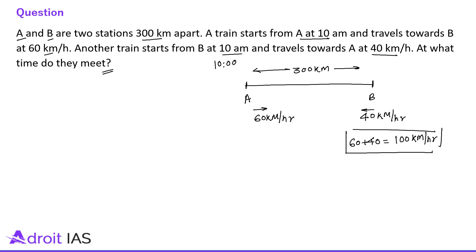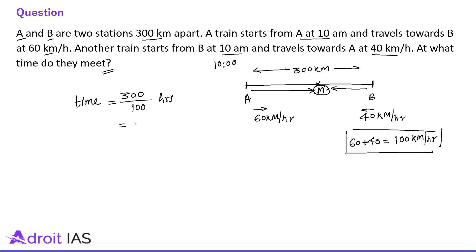When they are meeting, both trains together are covering 300 km. They are approaching each other at 100 km per hour, so time is distance divided by speed: 300 divided by 100 equals 3 hours. Both trains started at 10 AM, so 3 hours after 10 AM they are meeting.